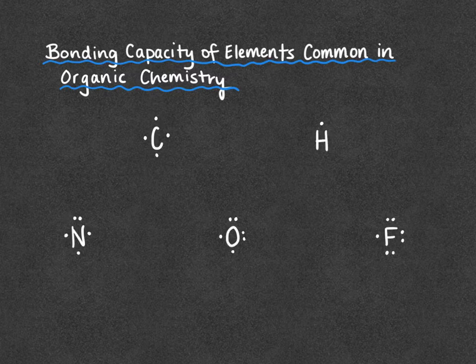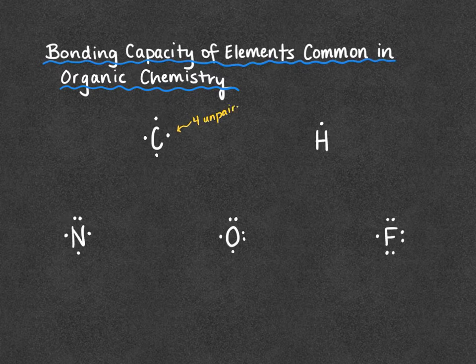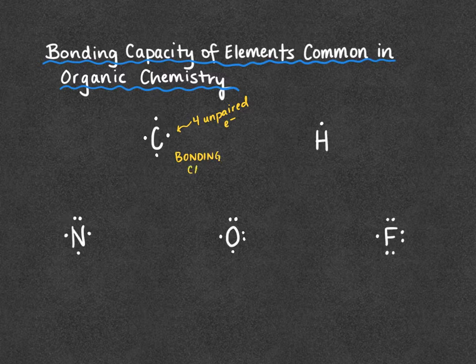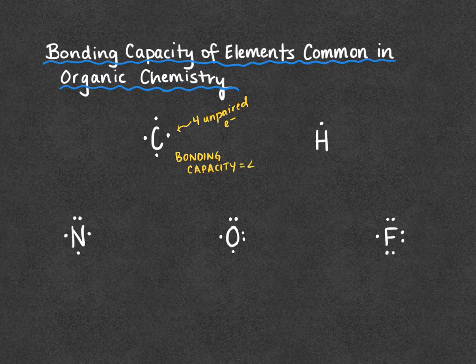Starting with carbon, we see that carbon has four unpaired electrons. Those four unpaired electrons mean that carbon has a bonding capacity of four, and this is going to be true for all group 14 elements.